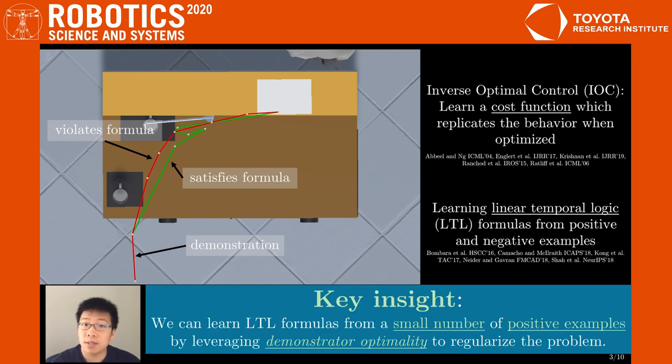Our insight is to take the best of both worlds. We show that we can solve the LTL learning problem with only safe demonstrations by using demonstrator optimality to regularize the problem.